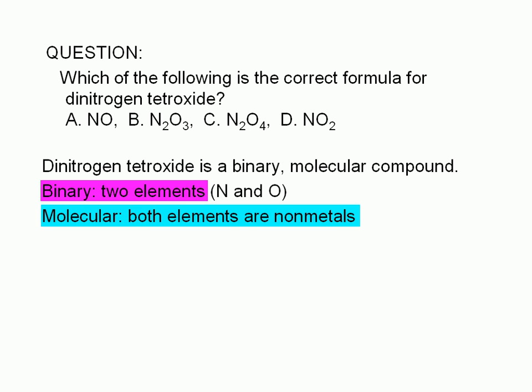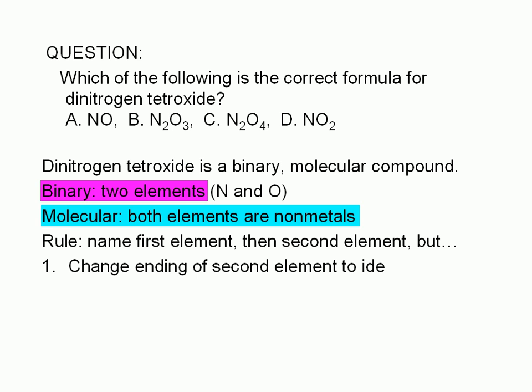The rule for naming binary molecular compounds is this. Name the first element, then the second element, but change the ending of the second element to ide.